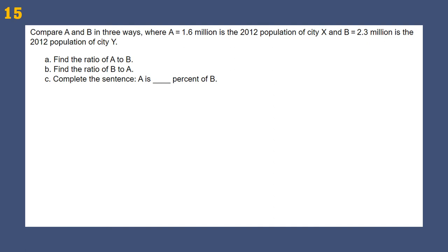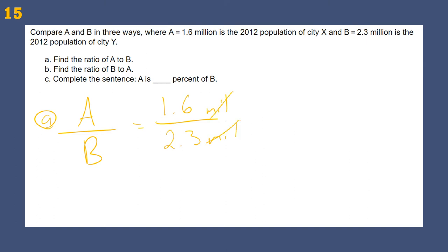Compare A and B in three ways where A is 1.6 million and B is 2.3 million. When writing ratios, we generally write them as fractions in this course. Ratio of A to B: put A over B — that's 1.6 over 2.3 (we don't need the million since it cancels). For ratio of B to A: flip it — 2.3 over 1.6. For 'A is what percent of B': take the ratio from part A and convert it to a percent by dividing and multiplying by 100.